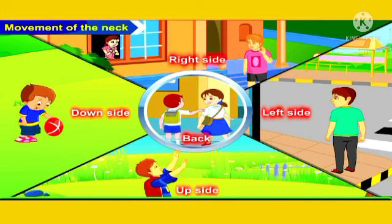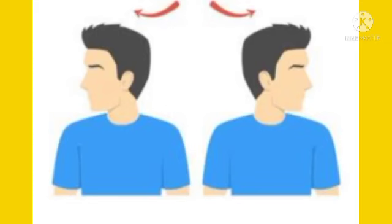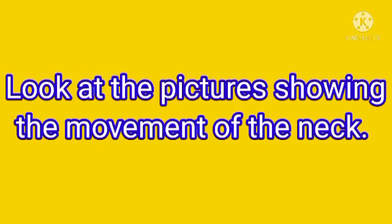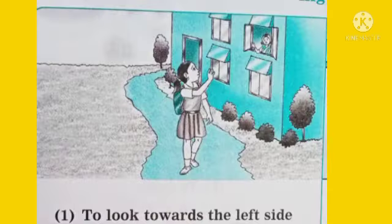With the help of the neck we can move to our left side, right side, up, and down. Look at the pictures showing the movement of the neck. In the first picture, the girl is turning to her left side and waving her hands to her mother.